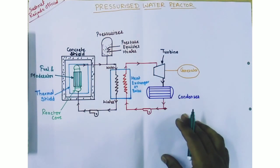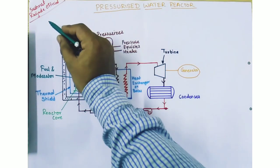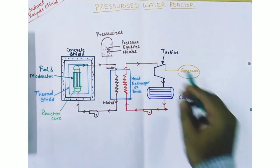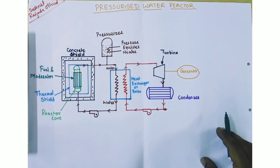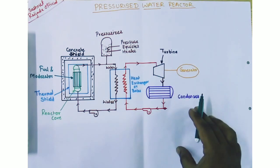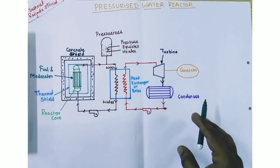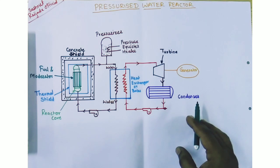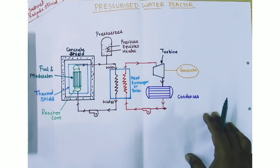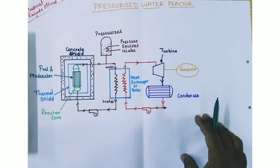Hello friends, welcome to the Sushrut Raizadeh official channel. In this video we are going to learn about the pressurized water reactor PWR, which is a type of nuclear reactor power plant. There are mainly two types: one is a thermal reactor, and the second one is a fast breeder reactor.